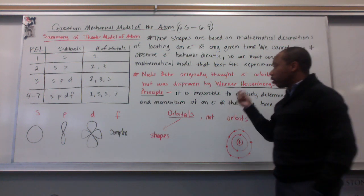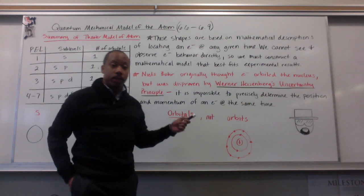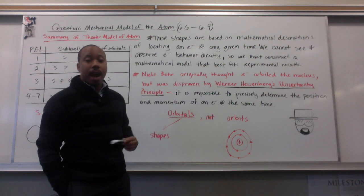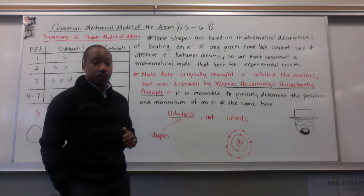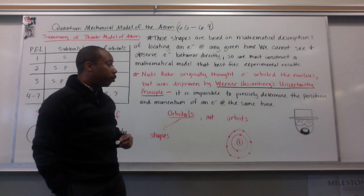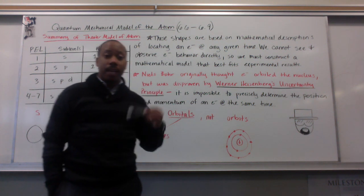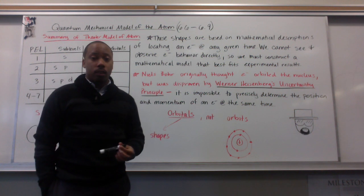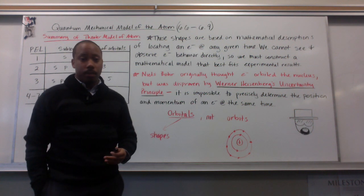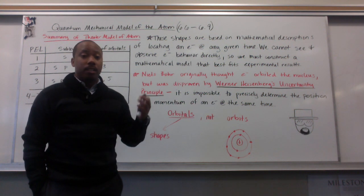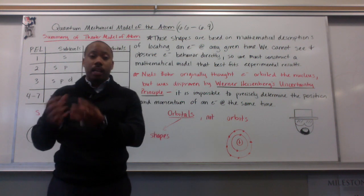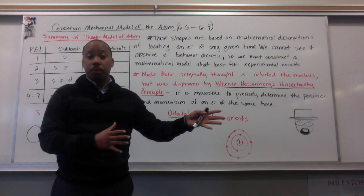Electrons do not orbit the nucleus, and this was disproven by a guy named Werner Heisenberg and his uncertainty principle, which states that it's impossible to precisely determine the position and momentum of an electron at the same time.